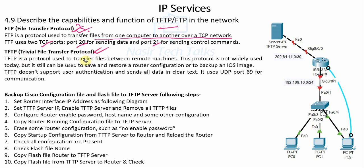TFTP means Trivial File Transfer Protocol. TFTP is a protocol used to transfer files between remote machines. As with FTP, TFTP is also used for file transfer in computer networks, but it is not widely used today because of some limitations. However, it can still be used to save and restore router configurations and to back up and restore IOS.